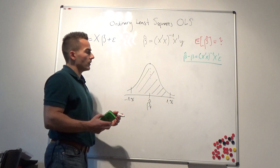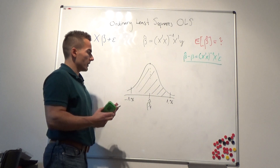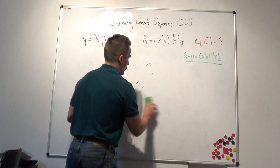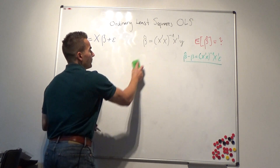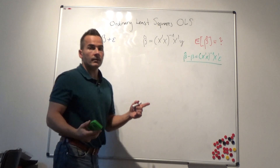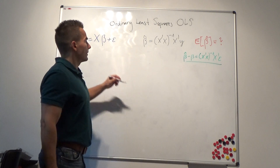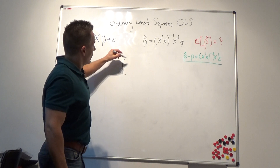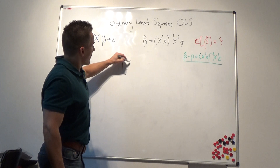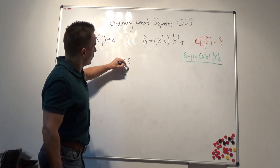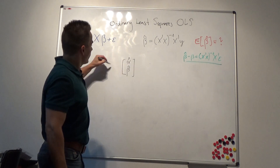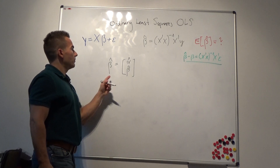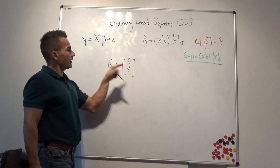Now the question arises: how do we compute the covariance matrix? We need to keep in mind that our point estimator is a vector. In the case of the CAPM, we have alpha-hat and beta-hat — a simple two-element vector. Beta-hat consists of alpha-hat and beta-hat.